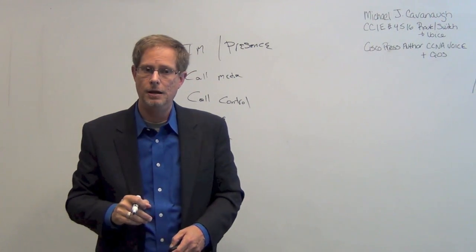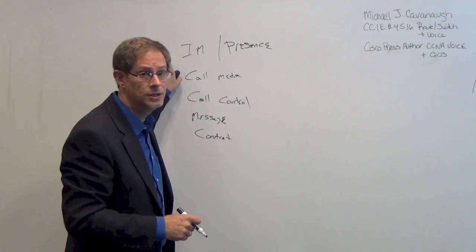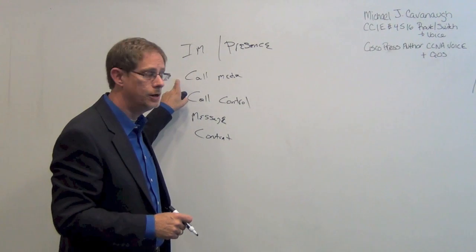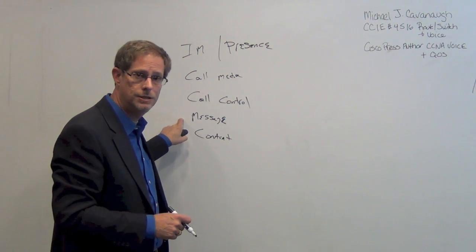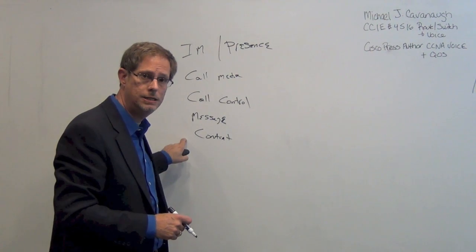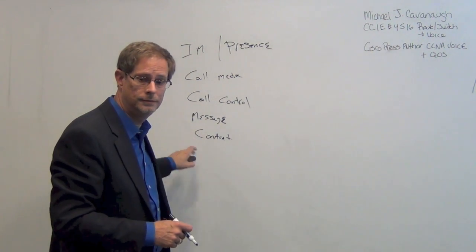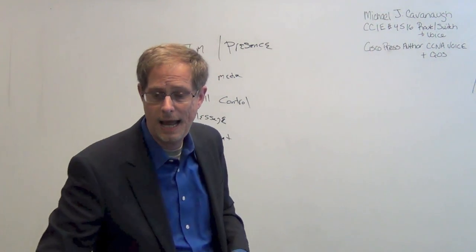So once we've got our Jabber client installed, we need to tell it some information. Which back-end services are we going to integrate into for the service type that you desire? In other words, who is my IM presence provider? Who is my call media provider? Who is my call control provider? Who is my message provider? And who are my content providers? So now we start talking about delivery message. How do we make this work?